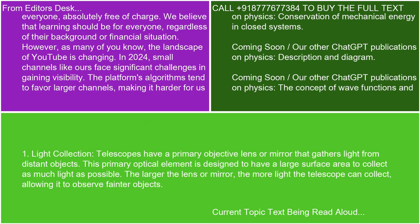1. Light collection. Telescopes have a primary objective lens or mirror that gathers light from distant objects. This primary optical element is designed to have a large surface area to collect as much light as possible. The larger the lens or mirror, the more light the telescope can collect, allowing it to observe fainter objects.